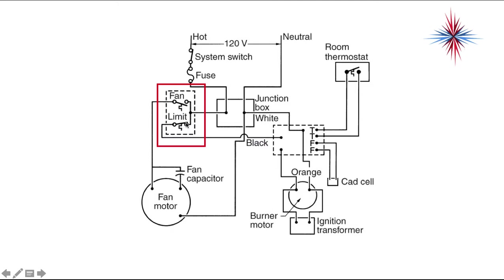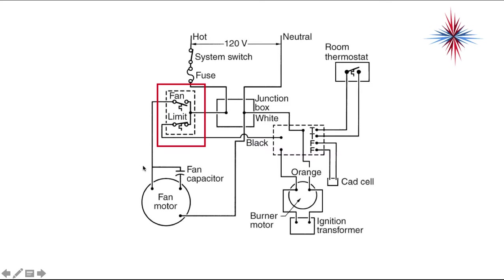The sequence of operation for the whole system is: the thermostat calls for heat, the flame comes on and starts warming up the furnace. At a certain temperature set on the helix, the fan thermostat closes, energizing the fan motor, and that blows the warm air into the home or business. If by chance the fan does not come on, or the fan does not have enough capacity through the ductwork to keep the furnace from overheating, the limit switch will open at around 200 degrees — plus or minus a few degrees based on manufacture. It will shut off the flame but allow the fan to continue to run to try to cool off the furnace.